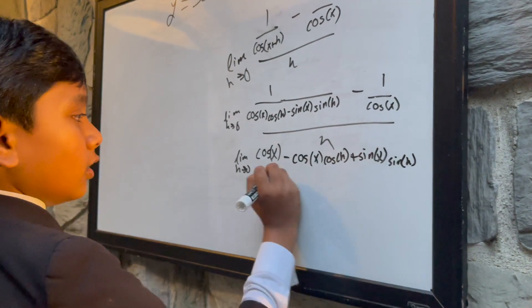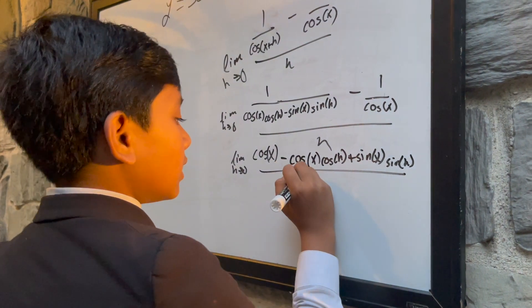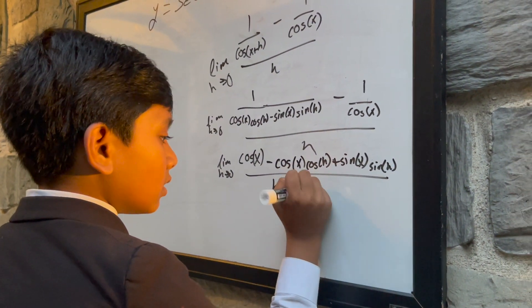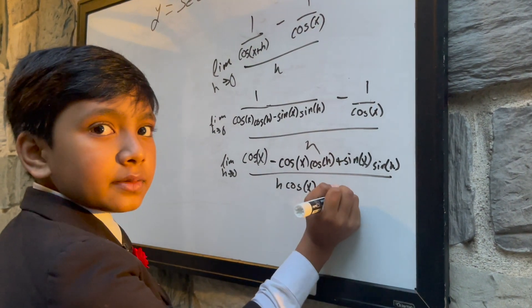Over h times cosine x times cosine x plus h.